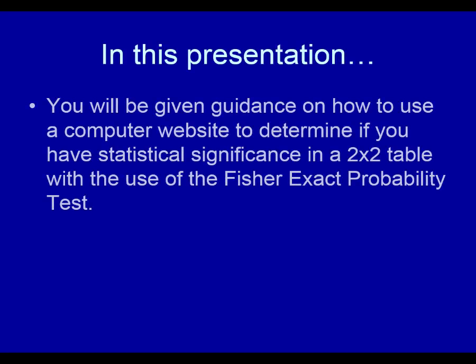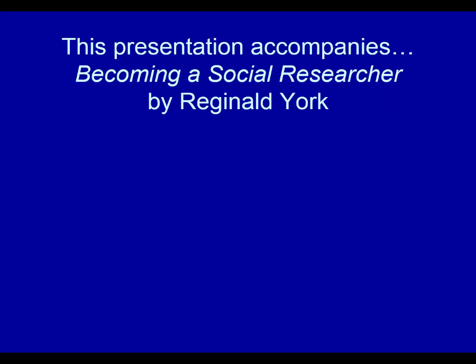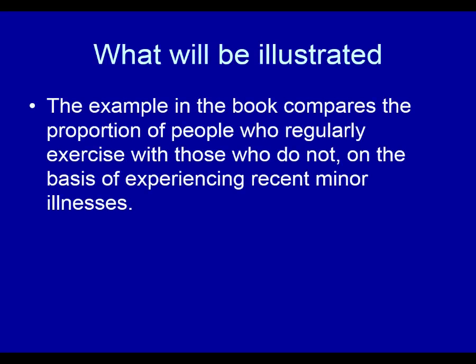In this presentation, you will be given guidance on how to use a computer website to determine if you have statistical significance in a 2x2 table with the use of this particular statistical test. This means you have data on two variables, each of which is measured as a dichotomy. The example in this presentation compares the proportion of people who regularly exercise with those who do not on the basis of experiencing recent minor illness.